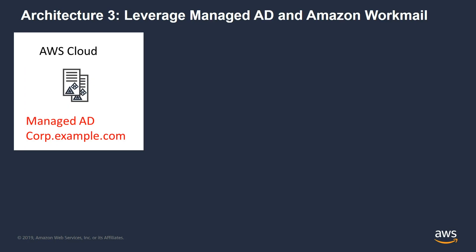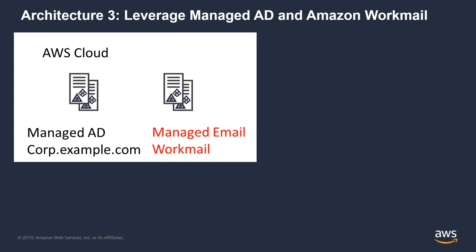The next option is for customers who do not have any Exchange or AD on-premises and want to provide their users email services — perhaps a startup or a government organization just starting out. To run AD in the cloud, you could set up virtual machines running Active Directory, or take advantage of a service called AWS Managed AD, where AWS stands up two Microsoft Active Directory domain controllers and manages them for you. In this example, we set up a Managed AD forest, corp.example.com, and then use the managed email service WorkMail, giving you an Exchange-compatible email service in the cloud where users can still use Outlook.